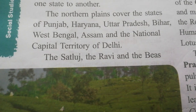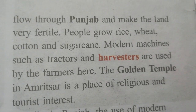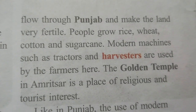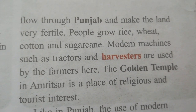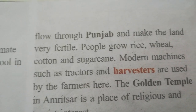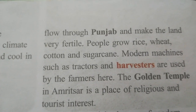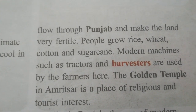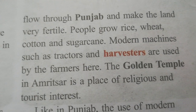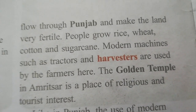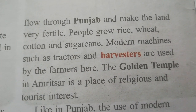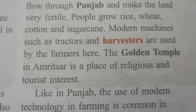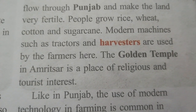The Sutlej, the Ravi, and the Beas flow through Punjab and make the land very fertile. People grow rice, wheat, cotton, and sugarcane. Modern machines such as tractors and harvesters are used by the farmers here.